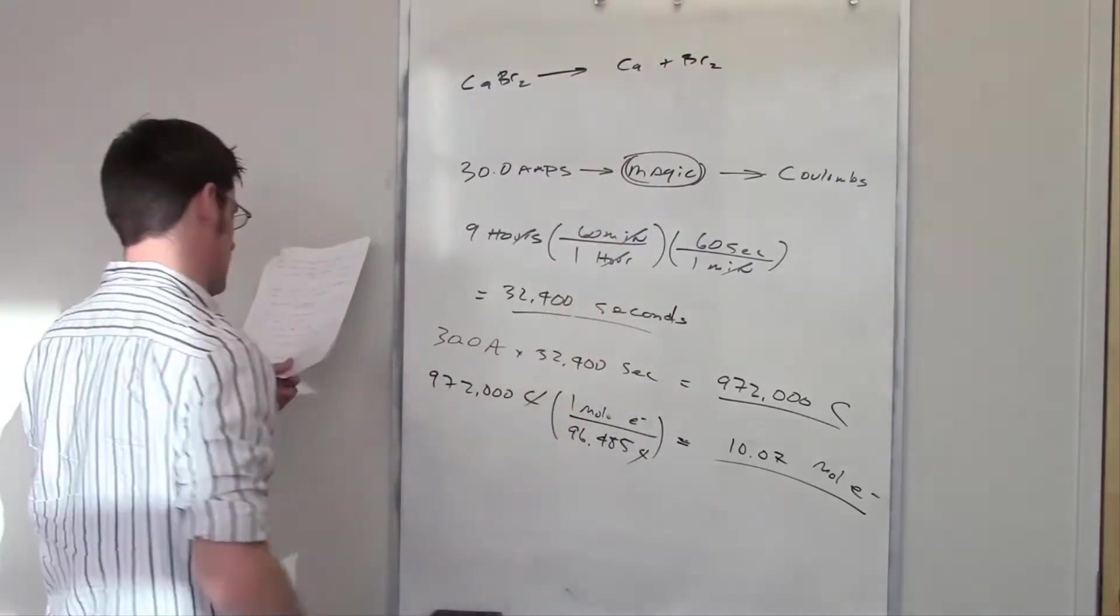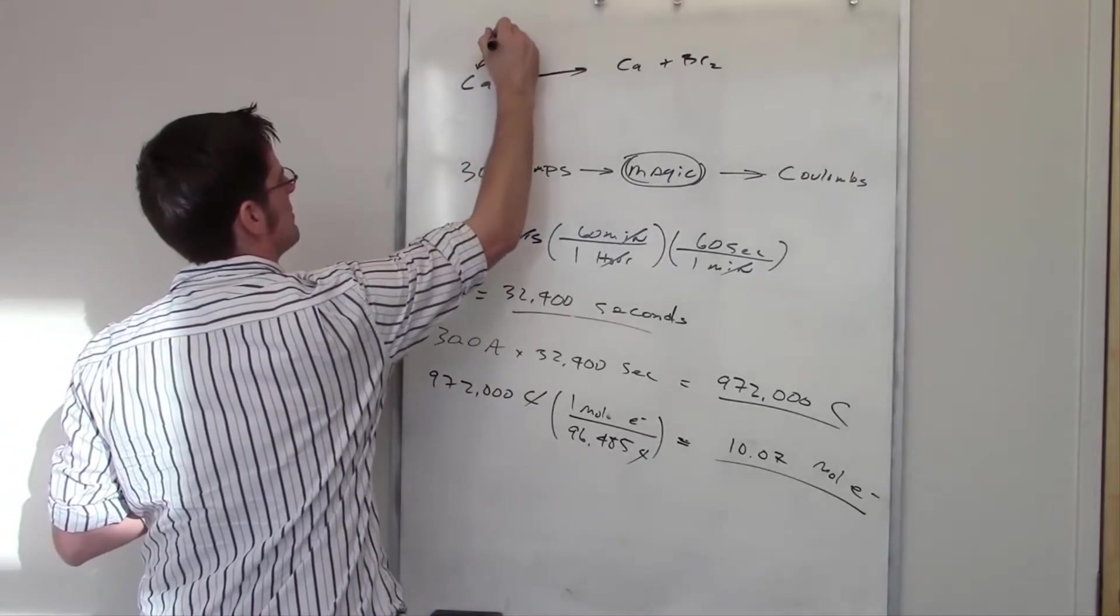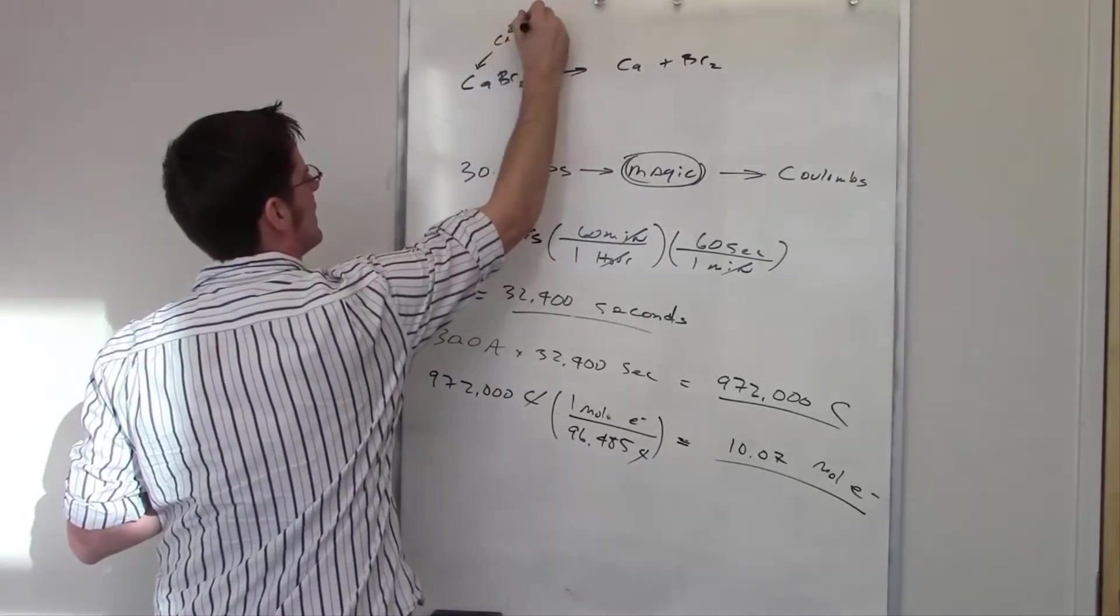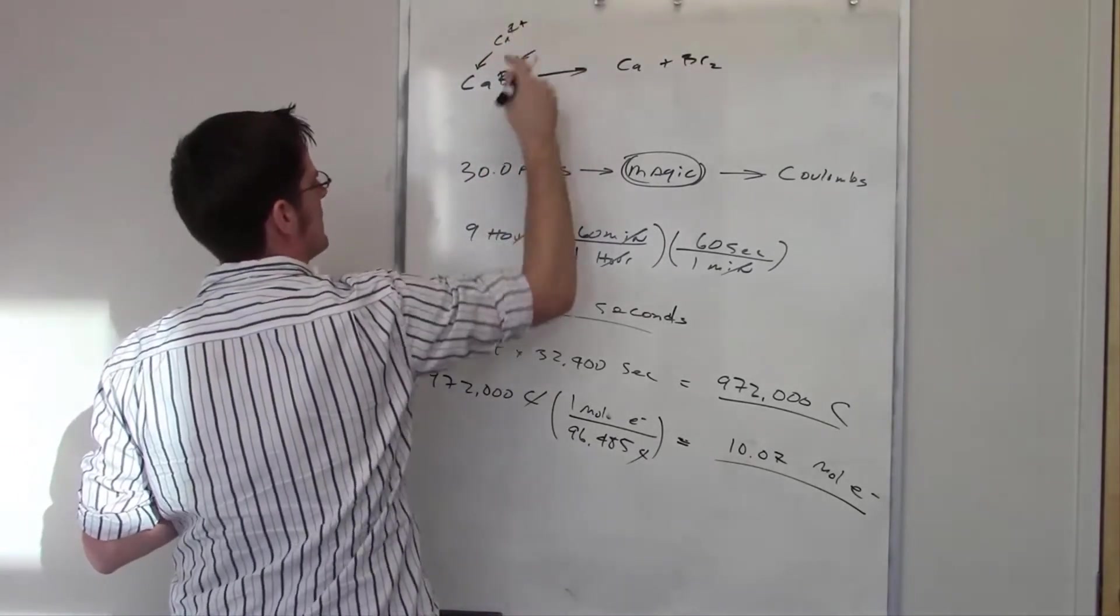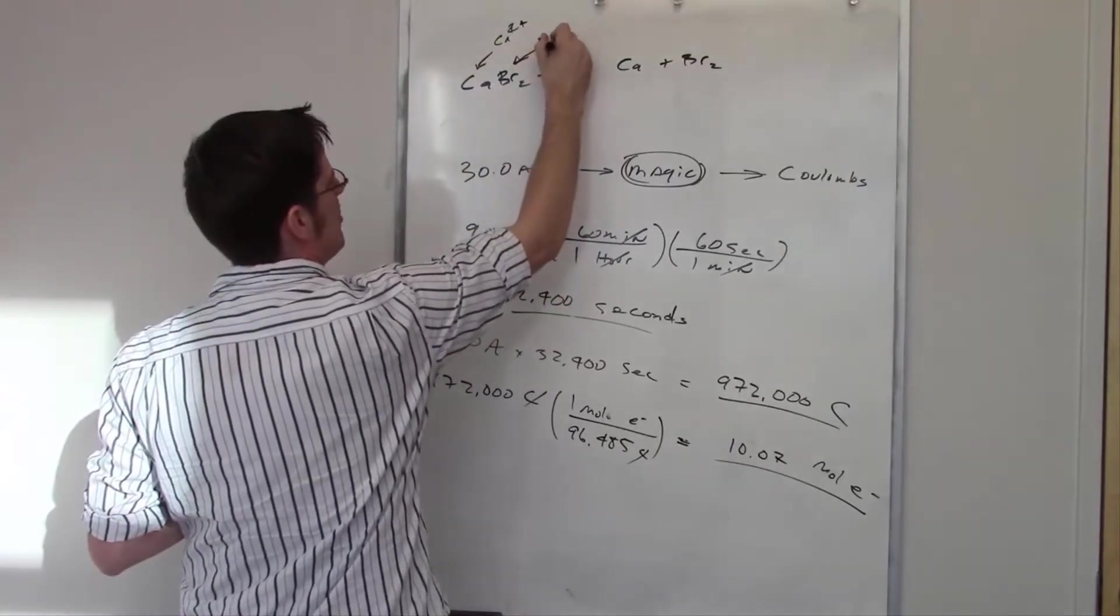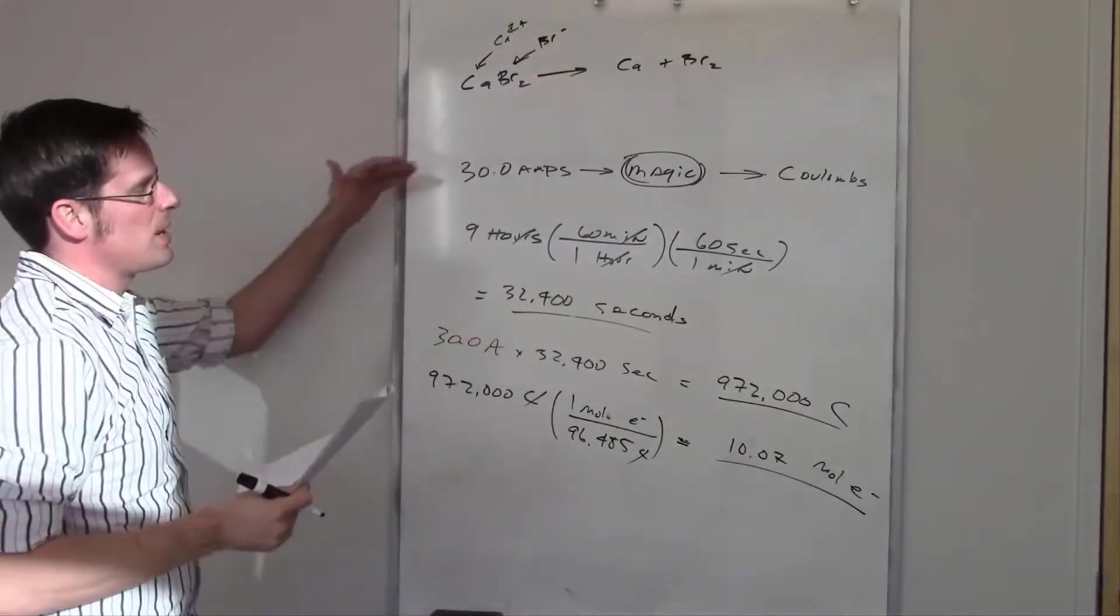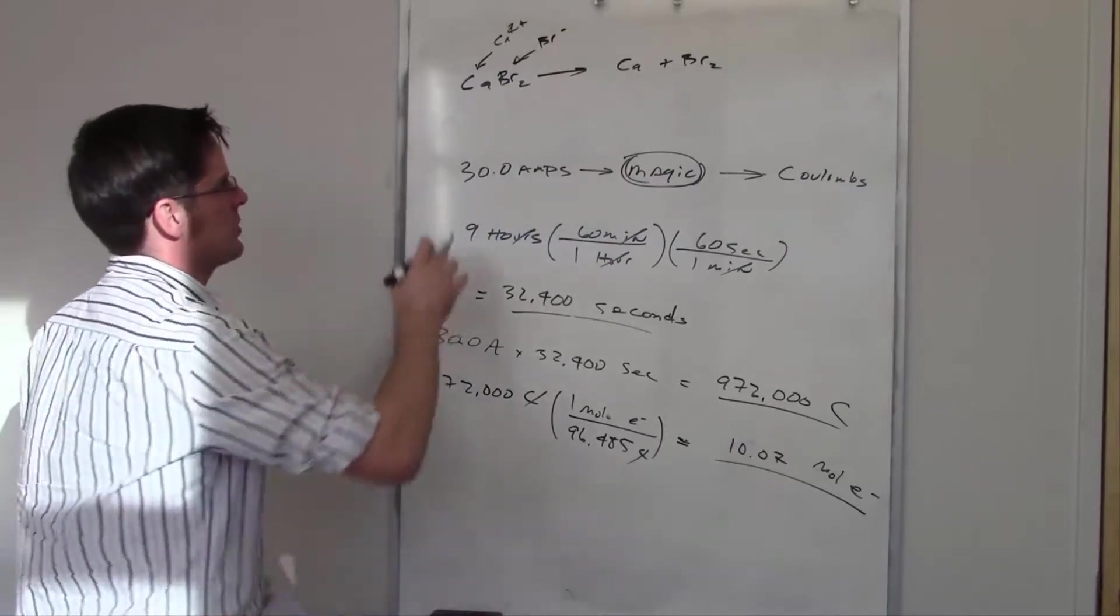In order to figure out how many electrons this is, I'm going to have to separate the sucker out, acknowledging this is Ca²⁺ and this is two separate atoms of Br⁻ bound to that Ca²⁺.